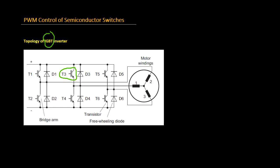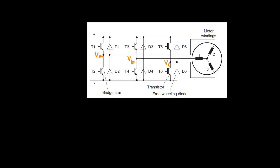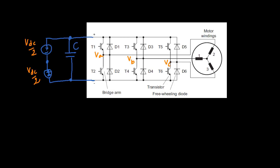However, IGBT can only allow the current to flow in one direction, and hence a free-wheeling diode in parallel is required to conduct the current flow in the opposite direction. In the three-phase two-level voltage source inverter for controlling AC machines, each leg of the inverter has two pairs of such a combination, consisting of an IGBT switch and a free-wheeling diode, where their middle point is linked to the load — an AC motor. Here, the front-end rectifier is replaced by two DC sources connected in series, and each supply offers half of the total DC bus voltage.